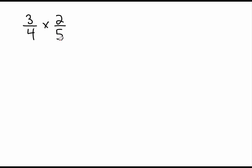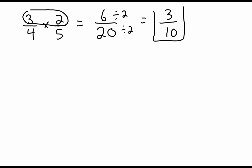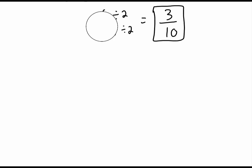Finding a common denominator is not wrong, it's just a time waster — you'll end up with huge numbers. Instead, multiply the numerators: three times two makes six. Then multiply the denominators: four times five makes twenty. Reduce by dividing both by two, and your answer is three tenths. We cannot reduce that any further, so the question is done.